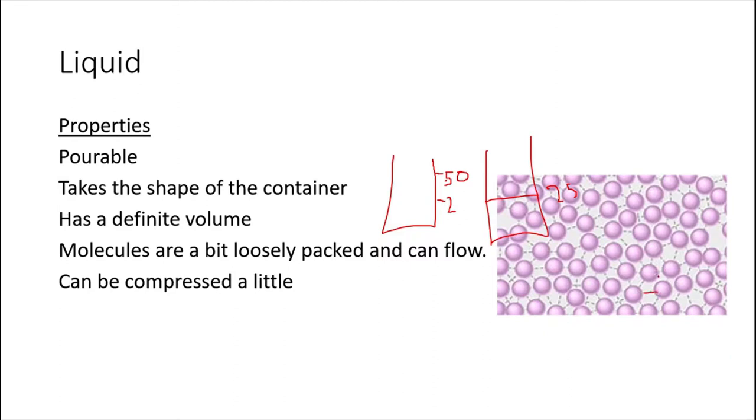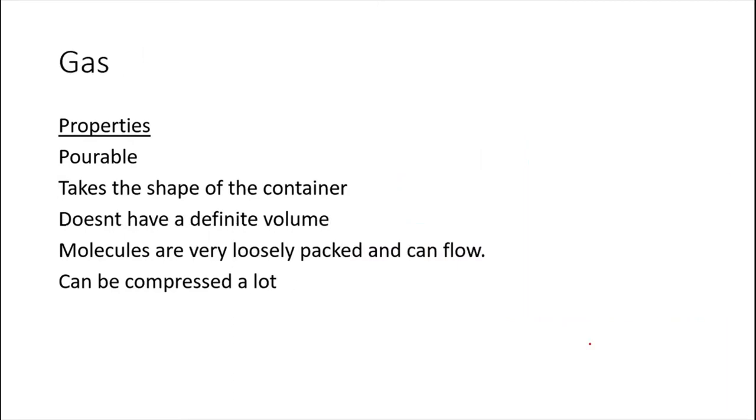Next is gas. The properties of gas are: gas is pourable, so you can pour it from a container to another. It takes the shape of the container. You have it in a cylindrical container, then the shape for gas is cylinder. Next, it doesn't have a definite volume.